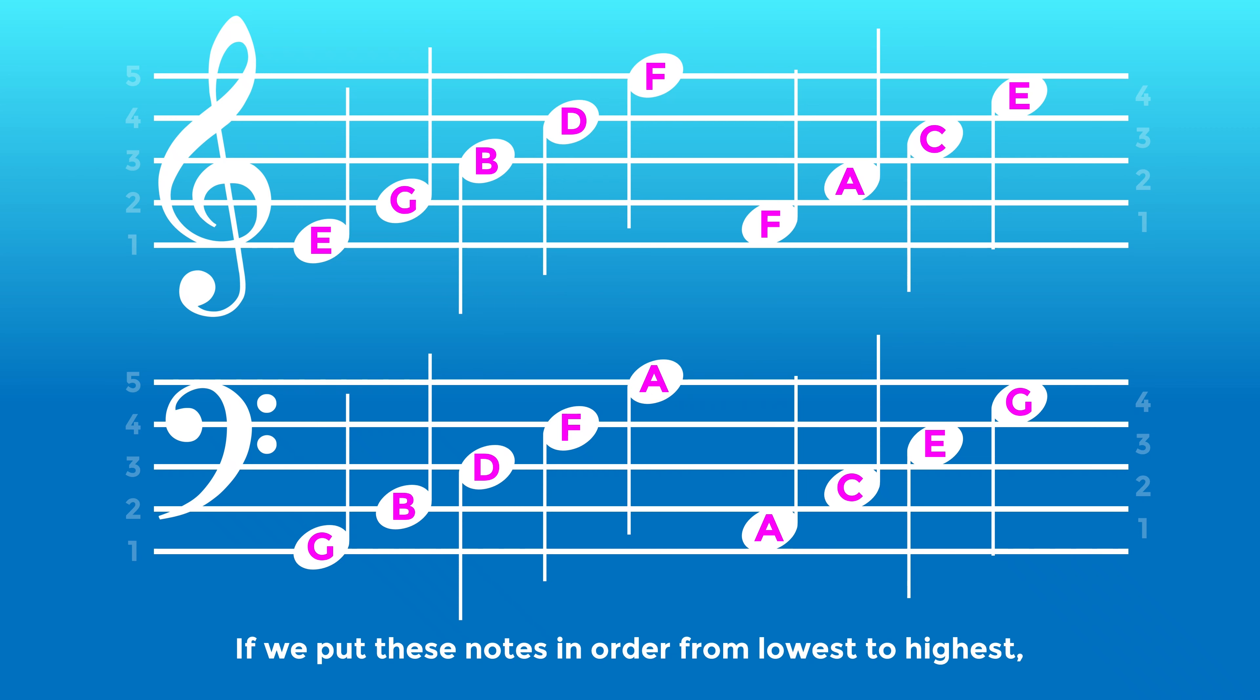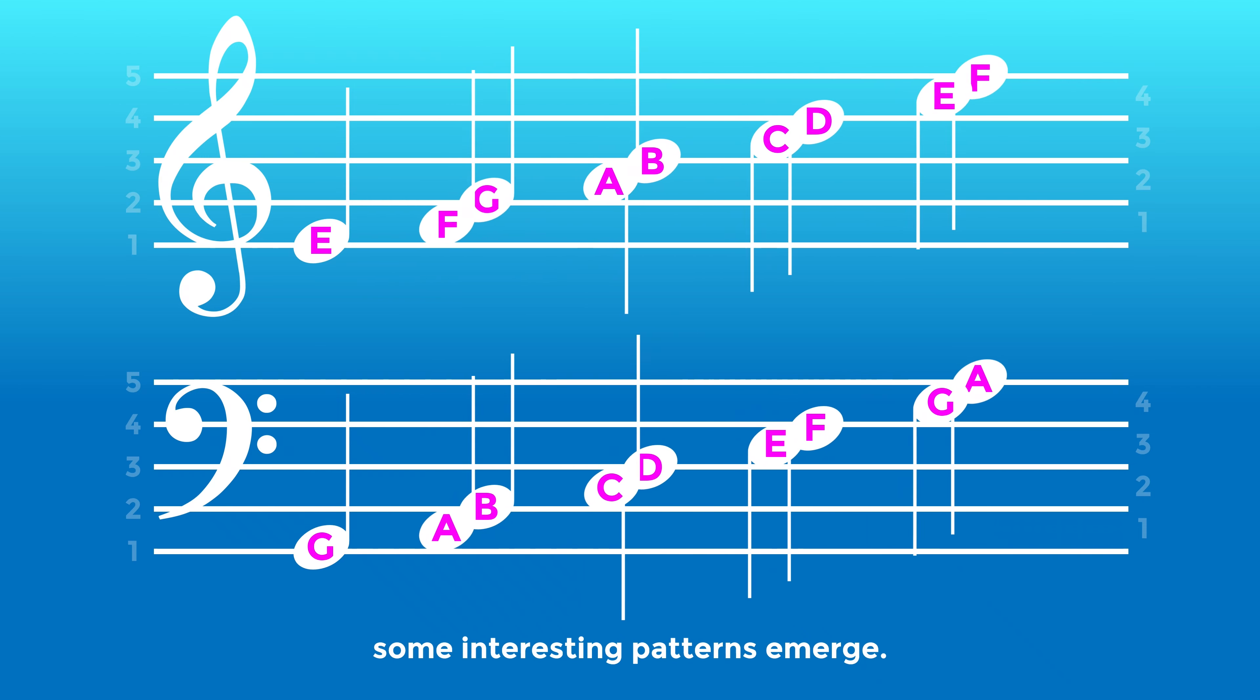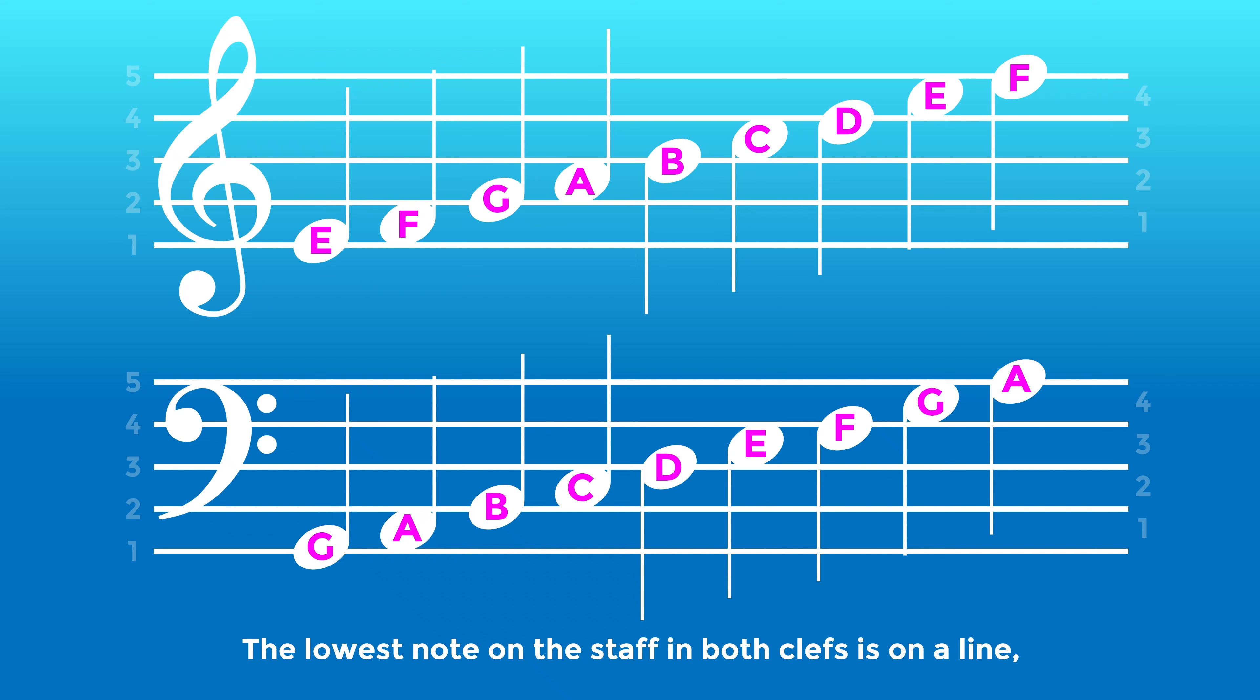If we put these notes in order from lowest to highest, some interesting patterns emerge. The lowest note on the staff in both clefs is on a line. This is the note E in treble clef and the note G in bass clef.